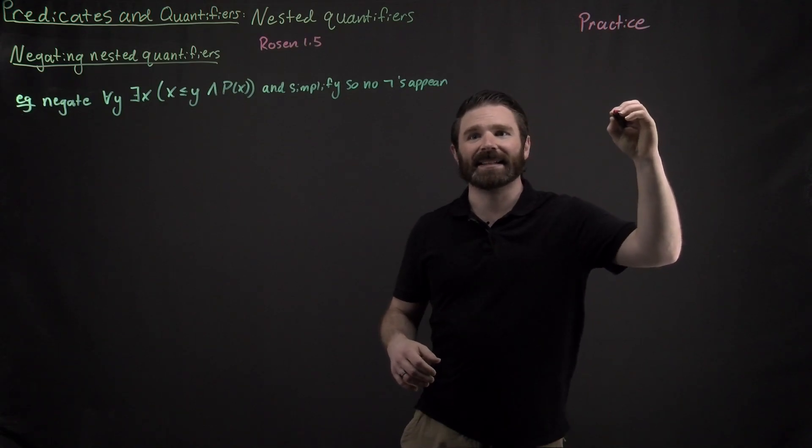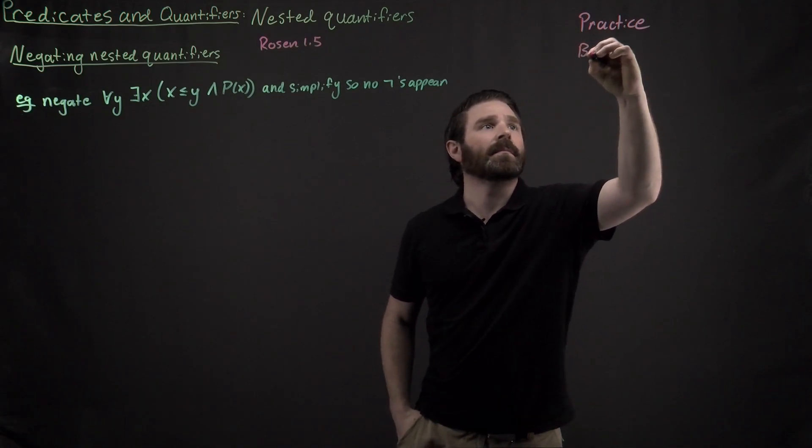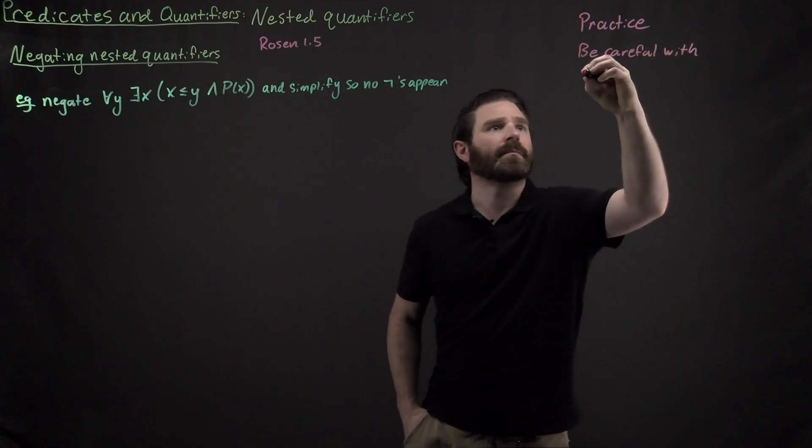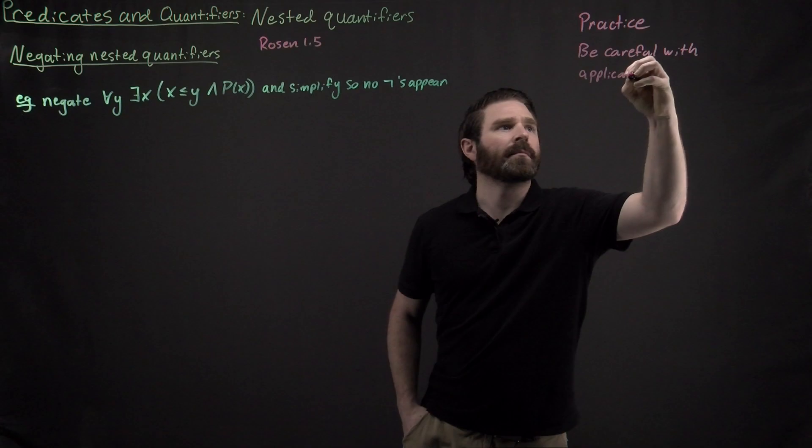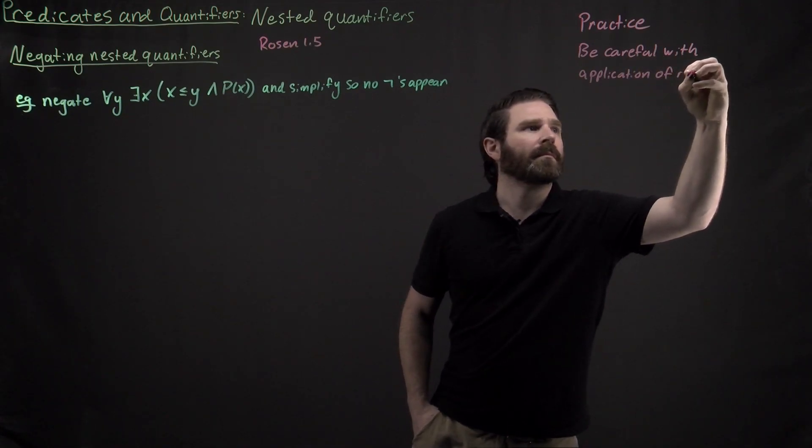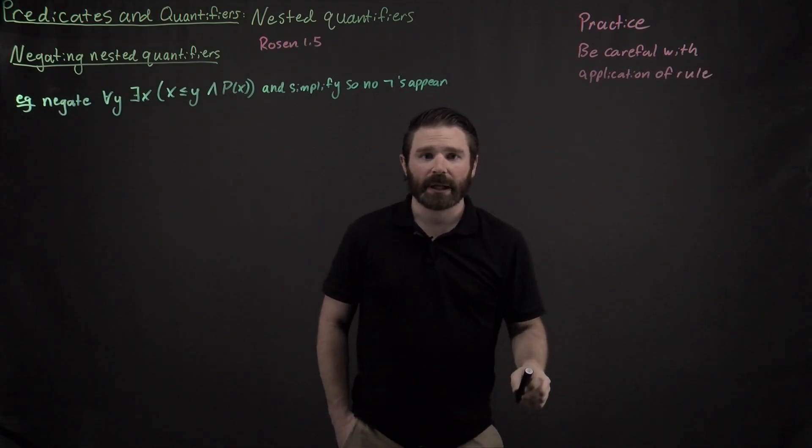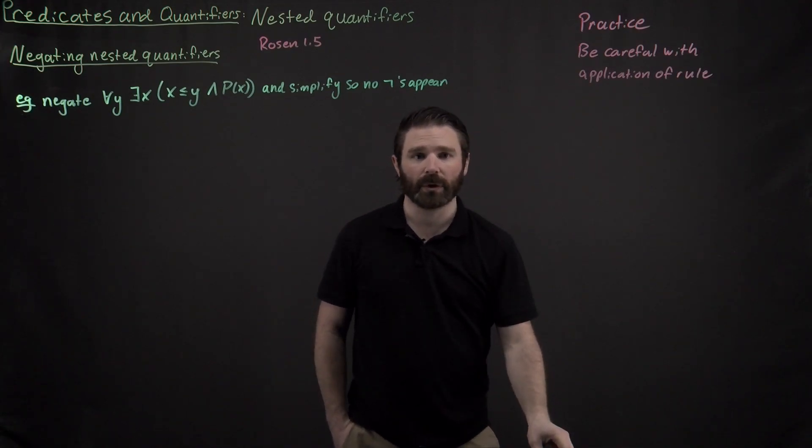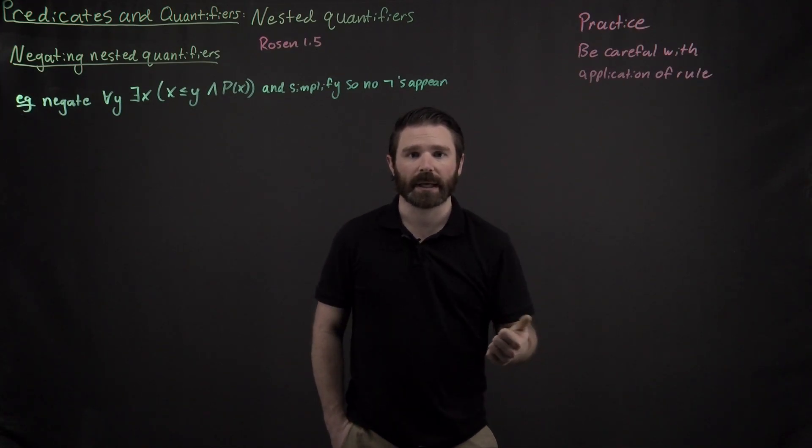And the next thing is, we have to be especially careful with the application of all the different rules that we have learned like DeMorgan's laws and all the different identities that we have seen so far.